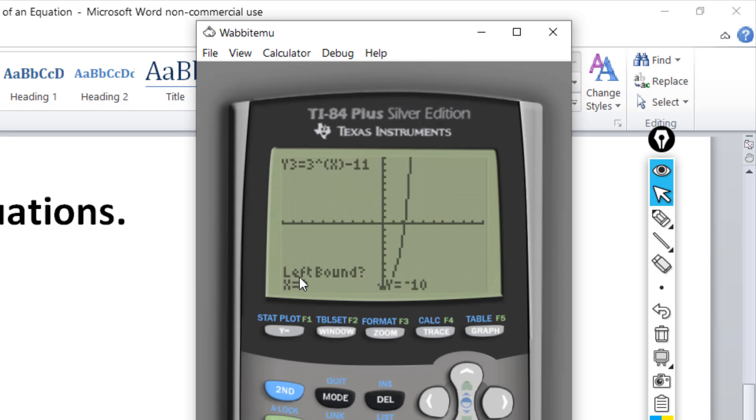And then we want the cursor. It's asking you for a left bound, so we want the cursor to the left of that point. Don't have to be real close as long as you're to the left there. Hit enter. That wants a right bound, so go past that point above it. Hit enter. Once a guess, now lower left there. Hit enter. Disregard it and hit enter.